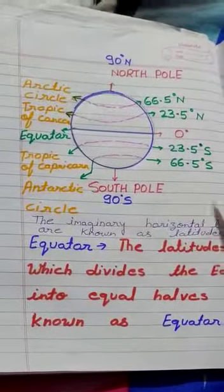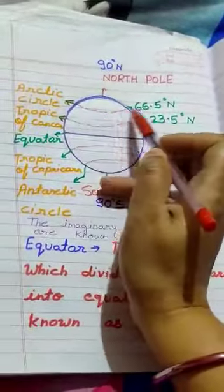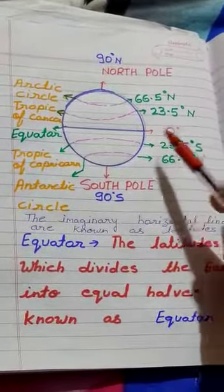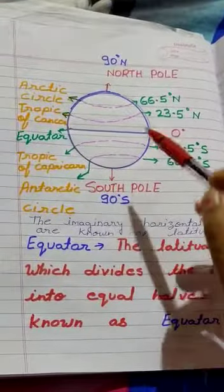This is the diagram of latitudes. The imaginary horizontal lines are known as latitudes.